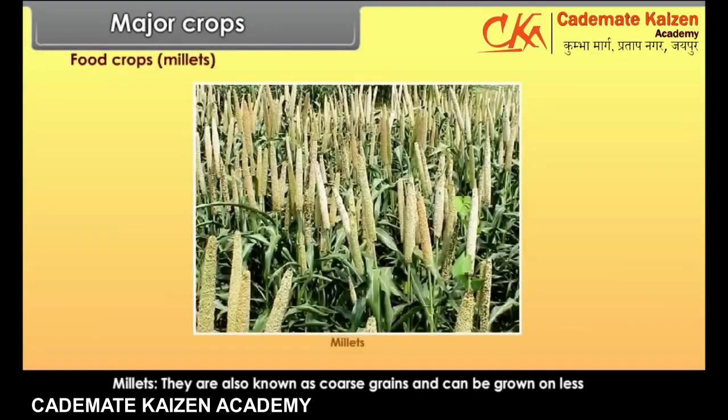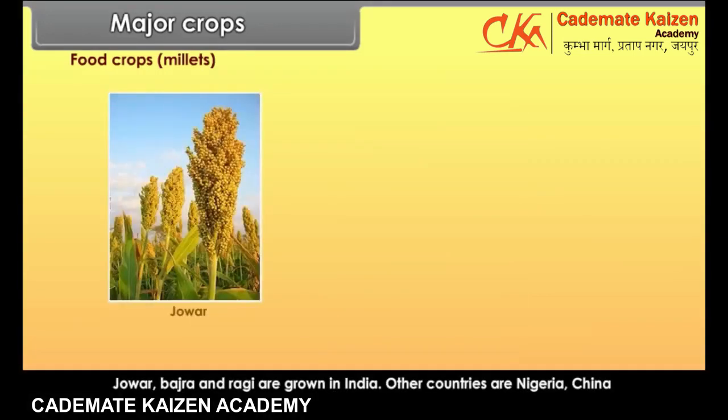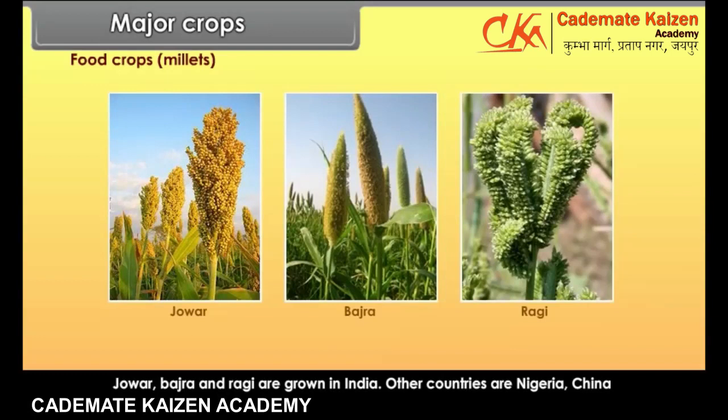Millets are also known as coarse grains and can be grown on less fertile and sandy soils. It is a hardy crop that needs low rainfall and high to moderate temperature. Jowar, bajra and ragi are grown in India. Other countries include Nigeria, China and Niger.